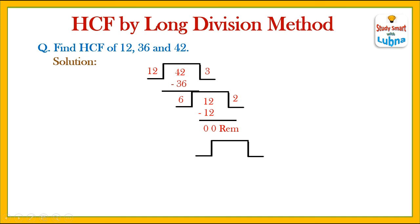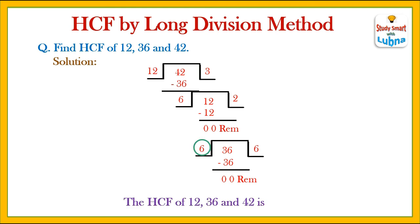So we will divide 36 by the last divisor, which is 6. 6 sixes are 36. Subtract 36 from 36 — 36 minus 36 equals 0. So the HCF of 12, 36, and 42 is 6, which is our last divisor.